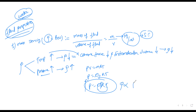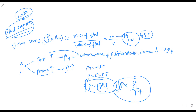Density is inversely proportional to temperature, so if temperature increases, the density decreases. Or else, if the pressure increases, the density must increase. We can get this idea from the ideal gas equation.